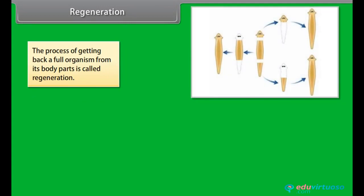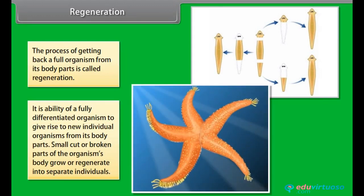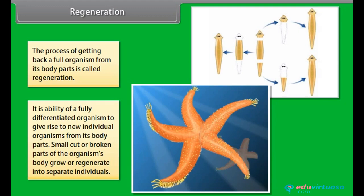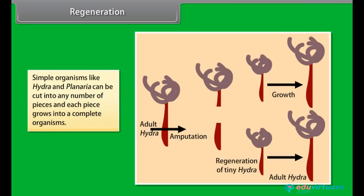The process of getting back a full organism from its body parts is called regeneration. It is the ability of a fully differentiated organism to give rise to new individual organisms from its body parts. Small cut or broken parts of the organism's body grow or regenerate into separate individuals. Simple organisms like hydra and planaria can be cut into any number of pieces, and each piece grows into a complete organism.